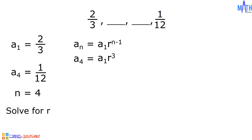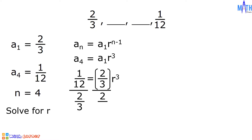Let us substitute the given values. A sub 4 is 1/12, equals a sub 1 which is 2/3, times r cubed. Let us isolate r by dividing both sides of the equation by 2/3, since 2/3 is the coefficient of r cubed. Let us simplify.